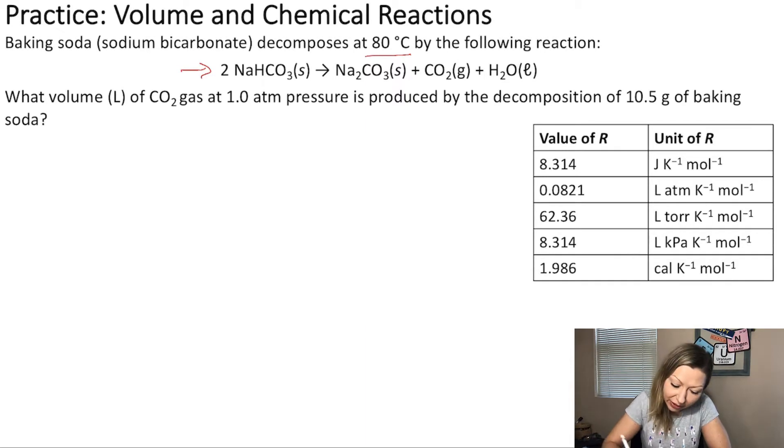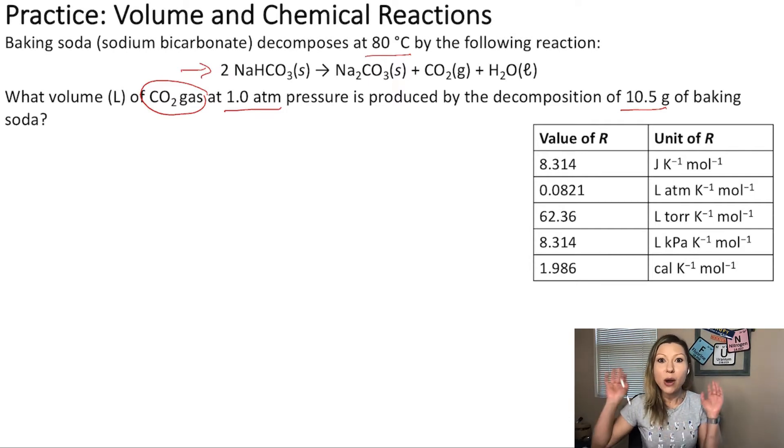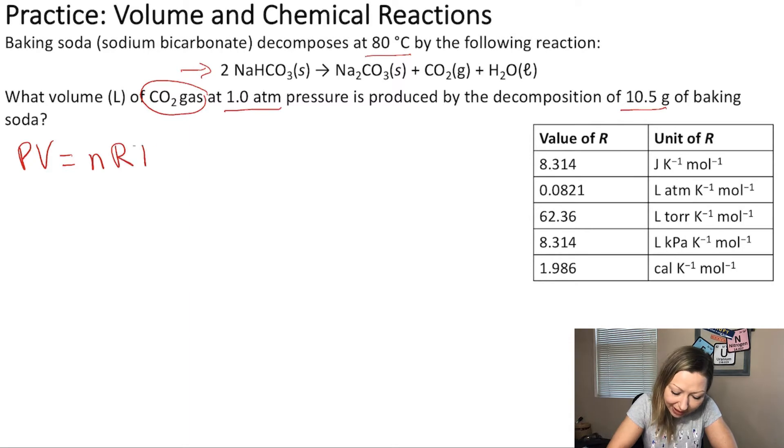What volume in liters of carbon dioxide gas at 1 atm pressure is produced by the decomposition of 10.5 grams of baking soda? So, because we have to calculate the volume, we know instantly that we need to use the ideal gas equation, which is PV equals nRT. And because we have to solve for volume, we can rearrange this equation: volume equals nRT divided by P, the pressure.